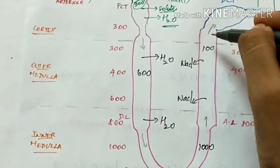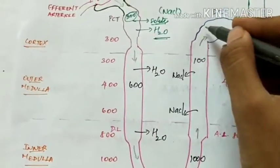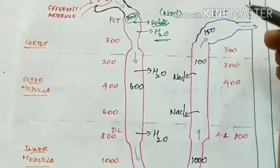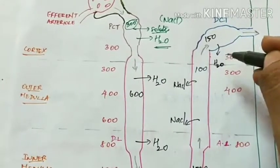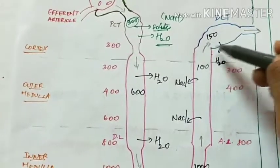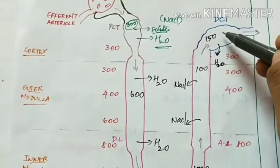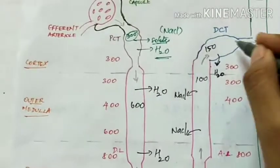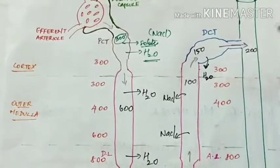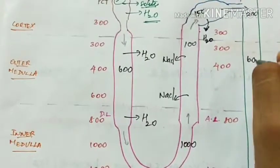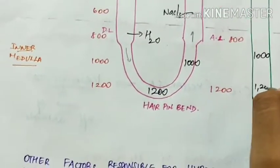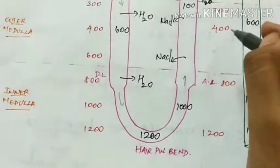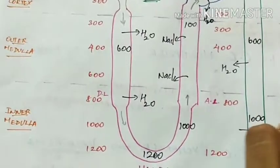When the urine enters the distal convoluted tubule, it is around 150 milliosmoles, and here there is reabsorption of water into the interstitium. So as water is reabsorbed, the urine becomes concentrated — osmolarity rises to 200, and as it descends down the collecting duct, it increases to 600 and can go up to 1200 milliosmoles, because even in the collecting duct there is reabsorption of water along with a little urea.